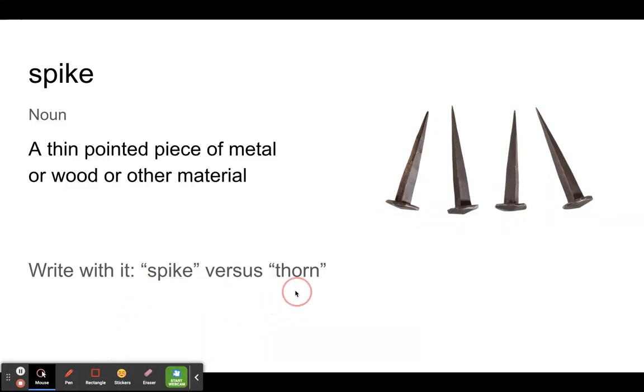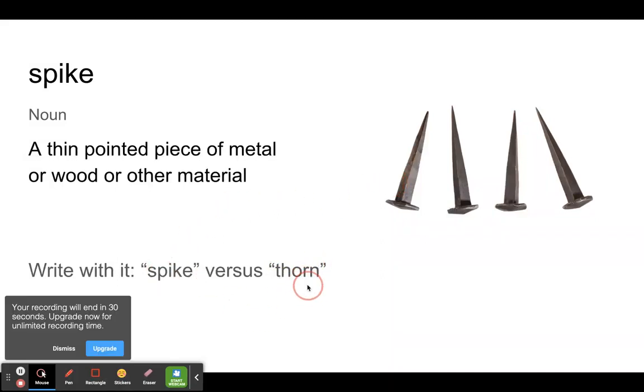What's the difference? A spike is generally made out of more man-made material. Like it could be made out of metal or it could be made out of plastic. It could be made out of wood. But a thorn is specifically something that grows on a plant. A plant grows thorns. You wouldn't ever call something made out of metal a thorn because it's not naturally grown in the wild.